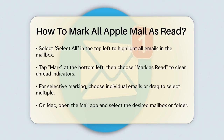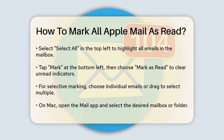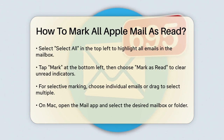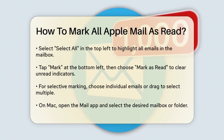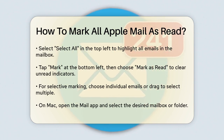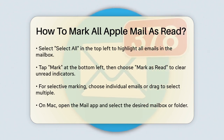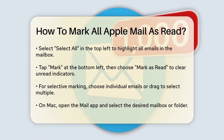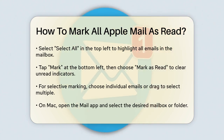Next, you'll see a Mark option at the bottom left. Tap Mark and then select Mark as Read. This will clear all the unread indicators for those emails. If you only want to mark a group of emails as read, you can select each message individually or drag your finger through a range of adjacent emails to select them quickly, and then follow the same steps to mark them as read.